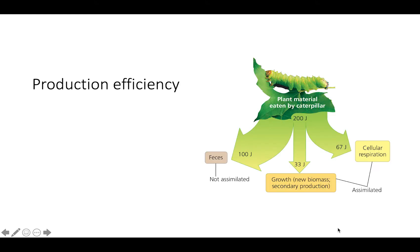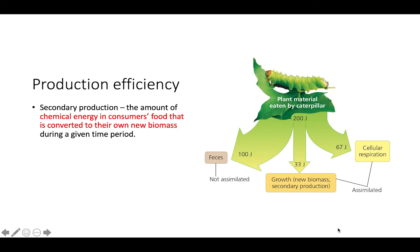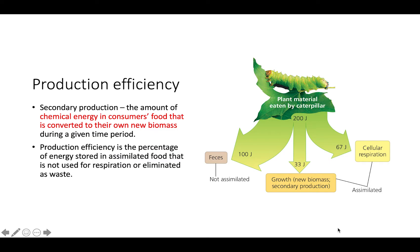This video is going to be about production efficiency. Secondary production is the amount of chemical energy in a consumer's food that is converted to their own new biomass during a given time period. Production efficiency can be thought of as the percentage of energy stored in assimilated food that is not used for cellular respiration and is not eliminated as waste.